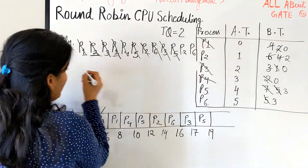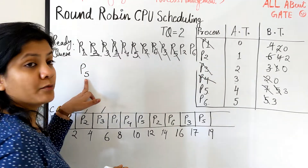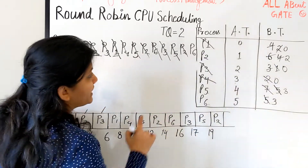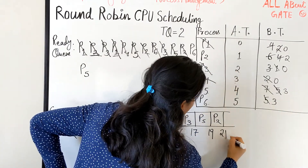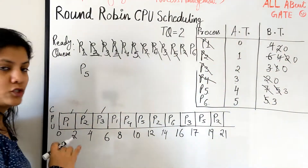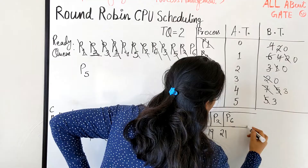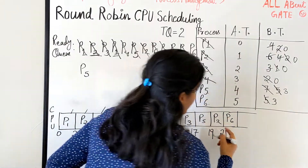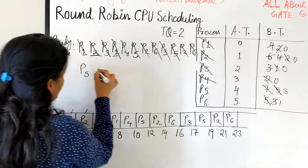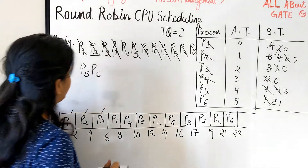P5 needs 5 burst units total; we give 2 — from 17 to 19 — leaving 3 remaining. P5 goes back. Next is P2, which needs 2 more units: 19 plus 2 is 21. P2 is completely finished! Next, P6 gets a chance — it needs 3 more but we give 2 — from 21 to 23 — leaving 1 remaining. P6 goes back after P5 in the ready queue.